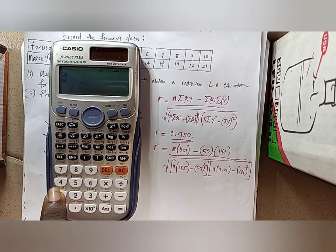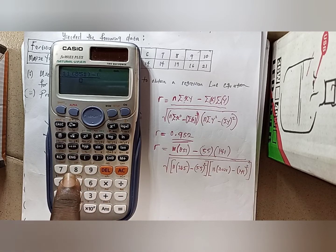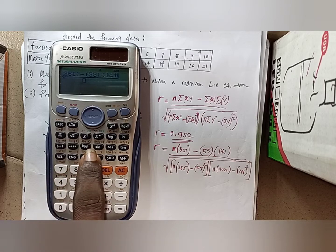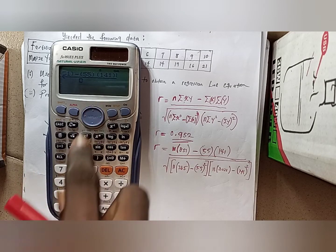Now I'll press this fraction button. You have a box divided, showing the numerator and the denominator. Then putting the values: 11 open bracket 851 close the bracket, minus open another bracket 55, then close it.